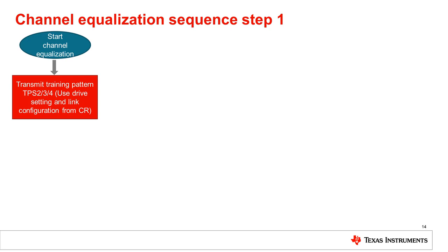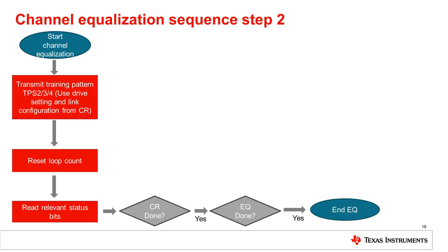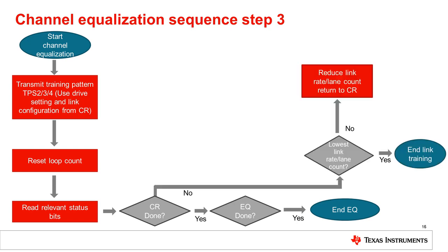In the EQ sequence, the source transmits the TPS2, 3, or 4 data pattern on the main link, using the drive settings and link configuration from the CR phase. The source resets the loop count and waits before reading the link status bits from the sink DPCD registers through the aux bus. If the CRDONE bits are set, the source stops transmitting the training pattern, indicating the end of training, and then starts transmitting video stream data. If the CRDONE bit is not set, the source downshifts to a lower link rate or lane count and returns to CR. If already at the lowest rate, the source ends link training, resulting in a blank screen.